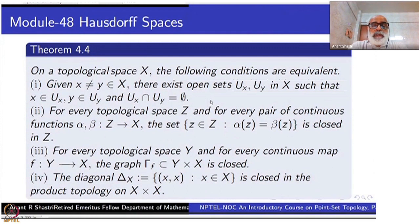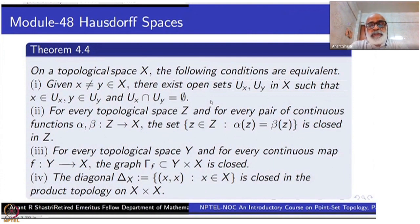Third condition: for every topological space Y and for every continuous map F from Y to X, the graph of F — which we denote by gamma F, defined as the set of points (y, F(y)) — is closed in Y cross X.